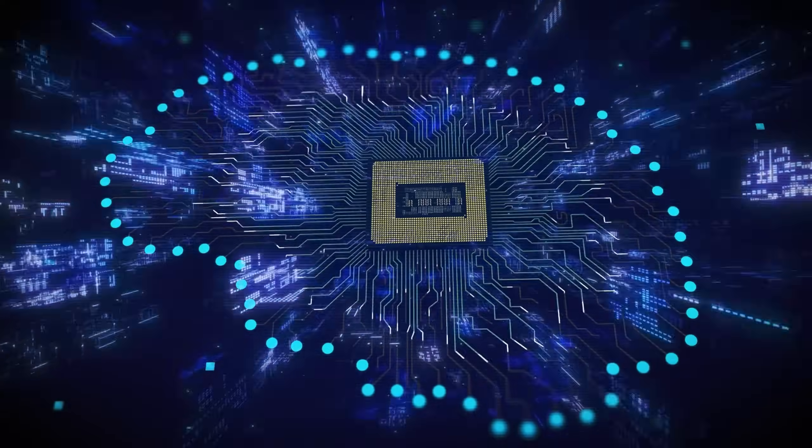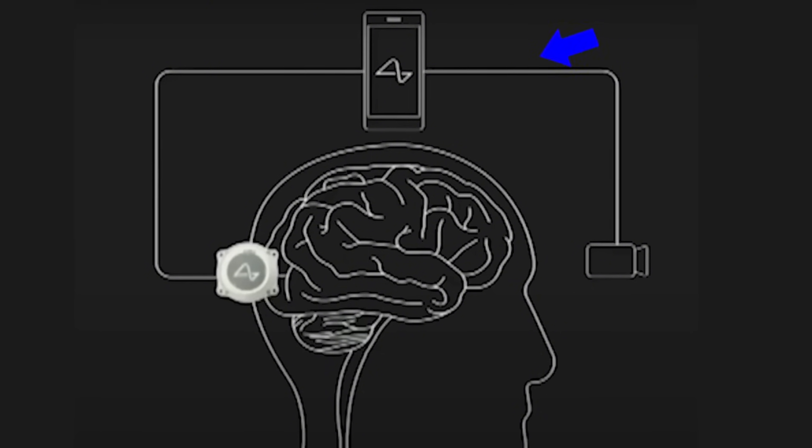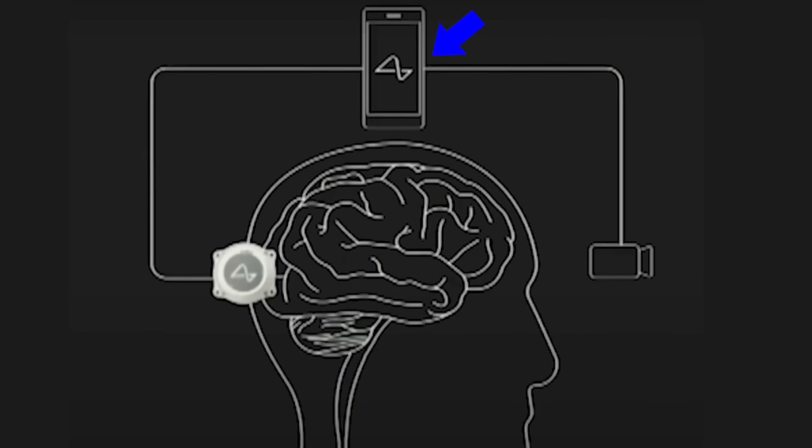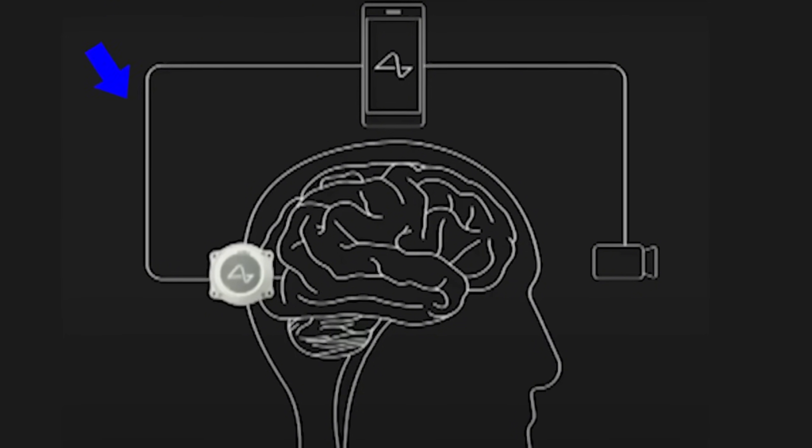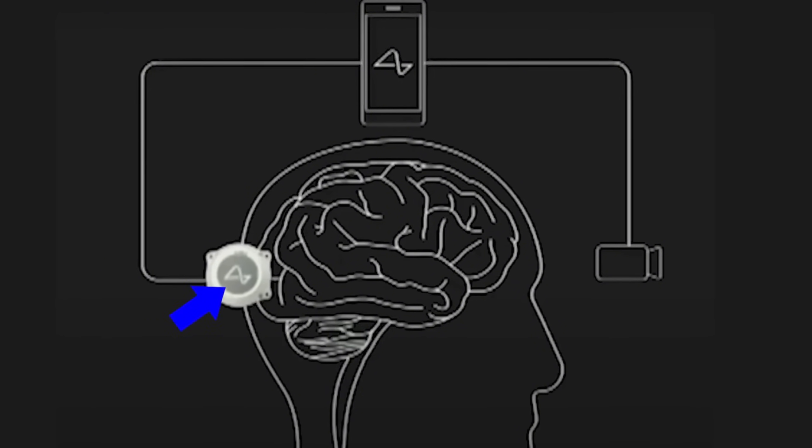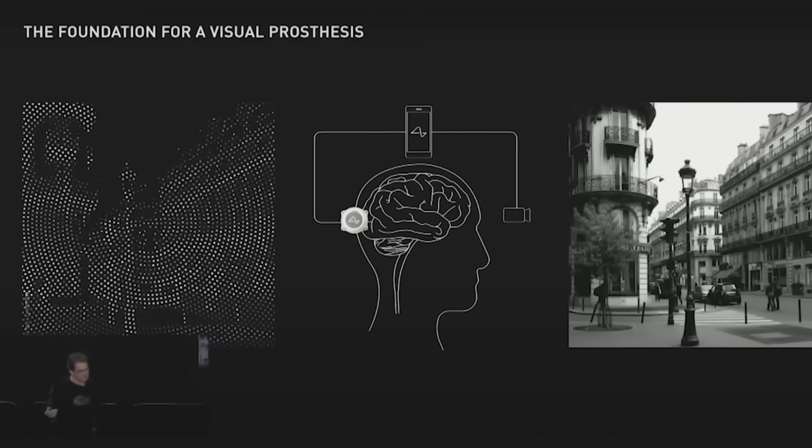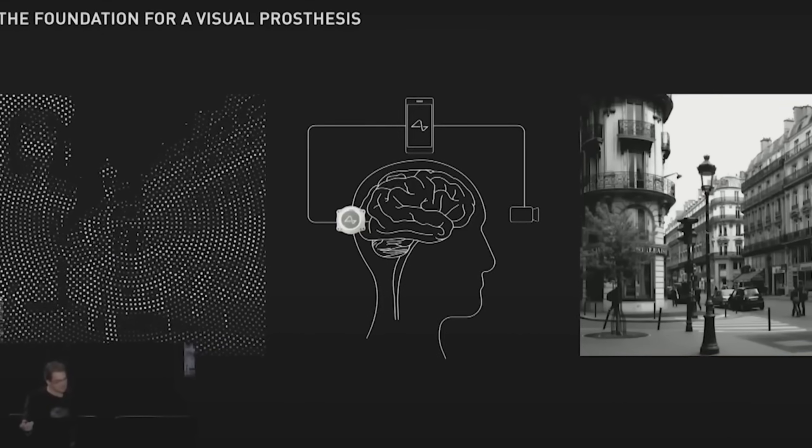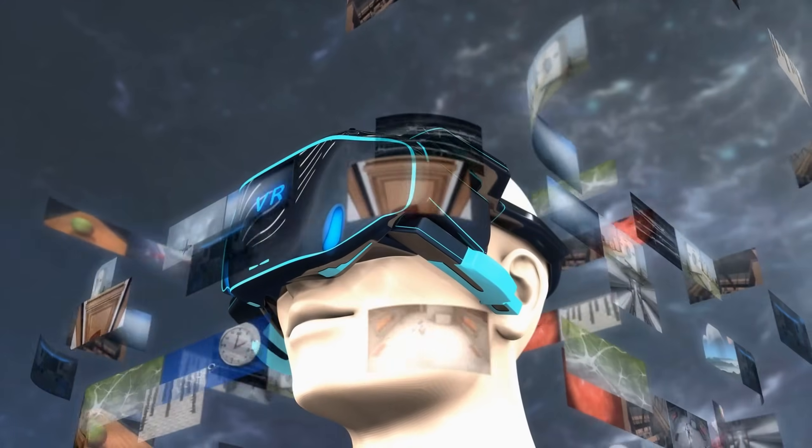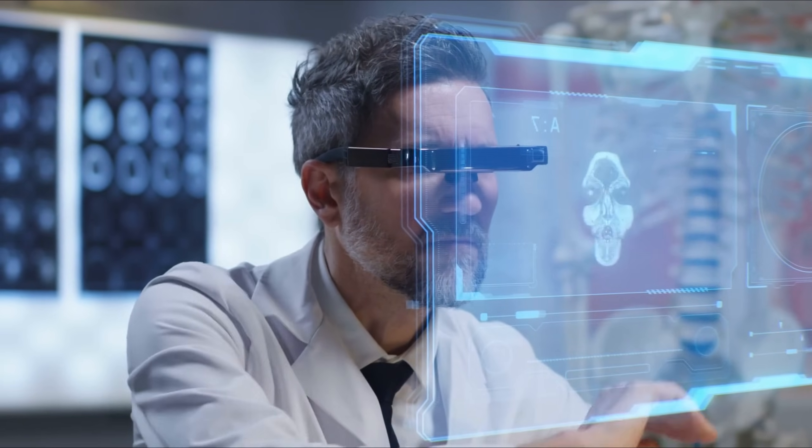If the chip doesn't work as hoped, they might use a camera to send images to the brain. The camera would send data to a phone, and the phone would change this into signals that the chip sends to the brain. This could let people see what's on the phone. This idea is a bit like virtual reality, and needs a lot of research.